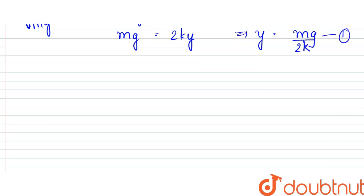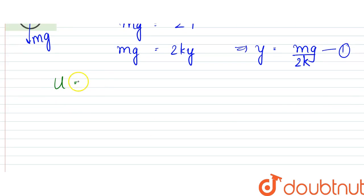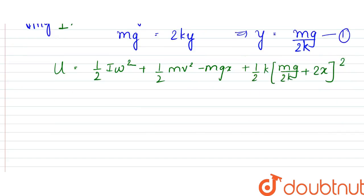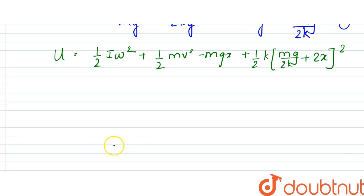Now the total energy would be equal to half I omega square plus half mv square minus mgx plus half k into (mg by 2k plus 2x) the whole square. So here x is nothing but the distance gone down by the pulley.